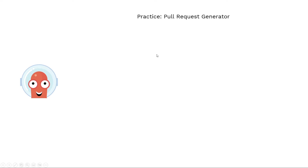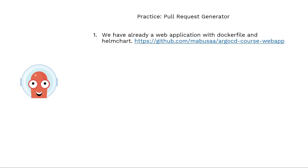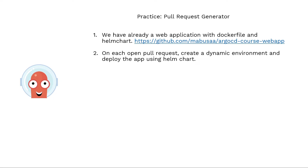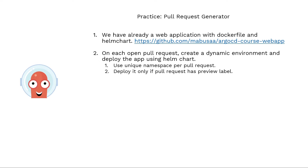In this video we will practice the pull request generator. We will have a web application with a Docker file and a Helm chart existing in a repository. We need to create a dynamic environment on each open pull request and deploy the application using the Helm chart. We have to use a unique namespace per pull request, and deploy it only if the pull request has a label of 'preview'. Once the pull request is merged or closed, the deployed application and resources should be deleted.